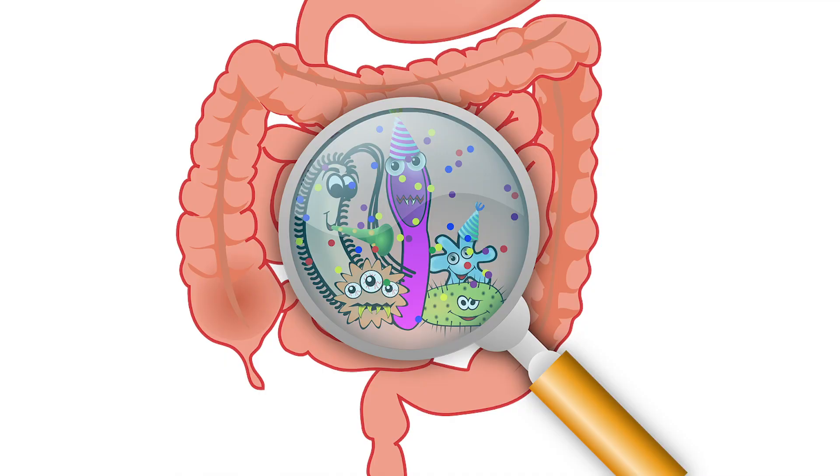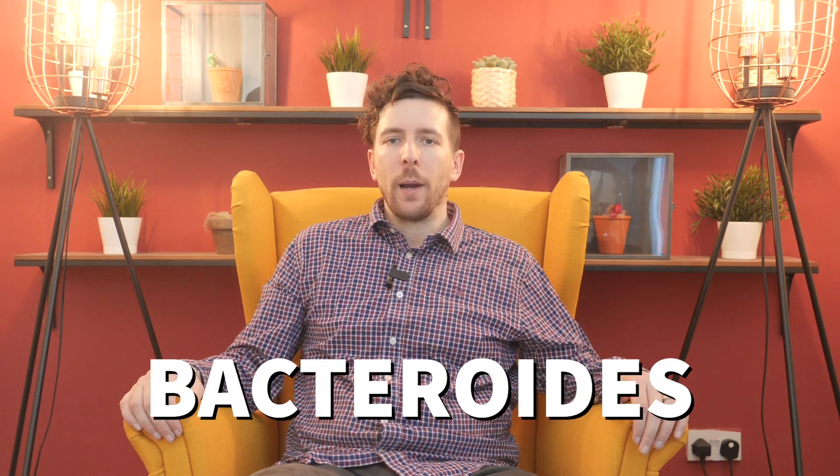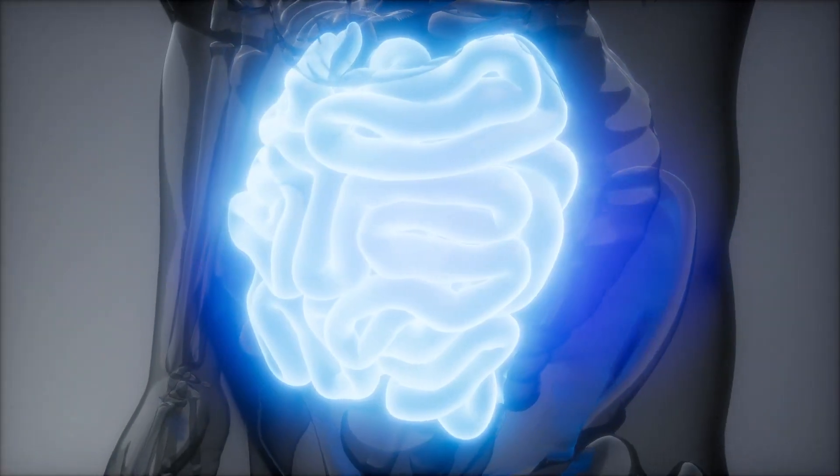The most common bacteria involved in driving SIBO infections are Streptococcus, Lactobacillus, and Bacteroides. Many people assume that SIBO is formed from bad bacteria, but these species are part of a normal healthy microbiome and play a pivotal role in gut health. Take the concept of good and bad out of your mind — the bacteria involved in SIBO infections are often very good bacteria; they are just migrating to a part of the gut that they shouldn't be.